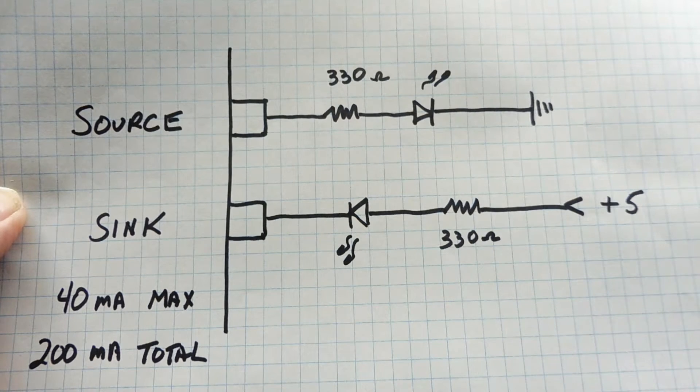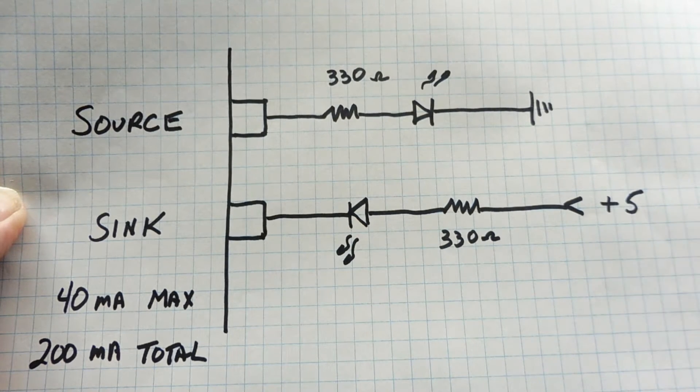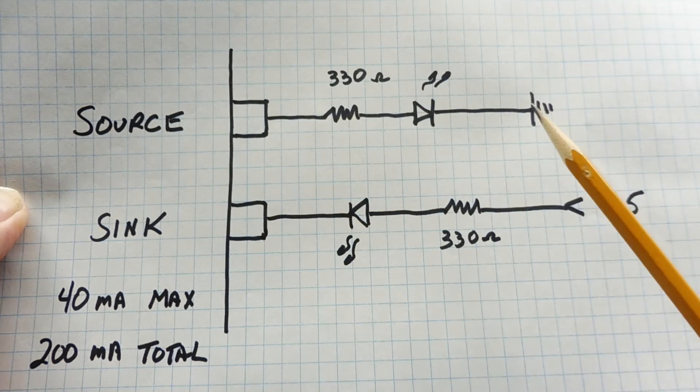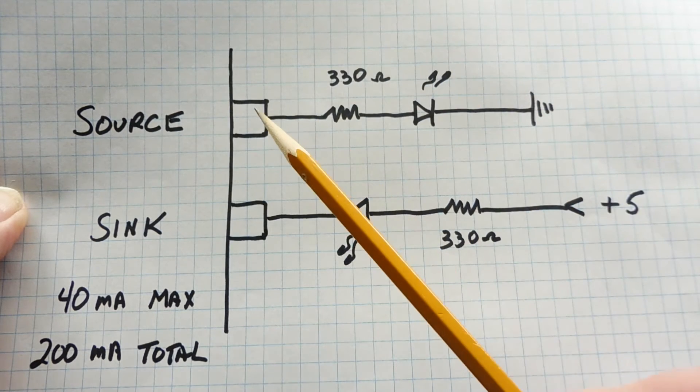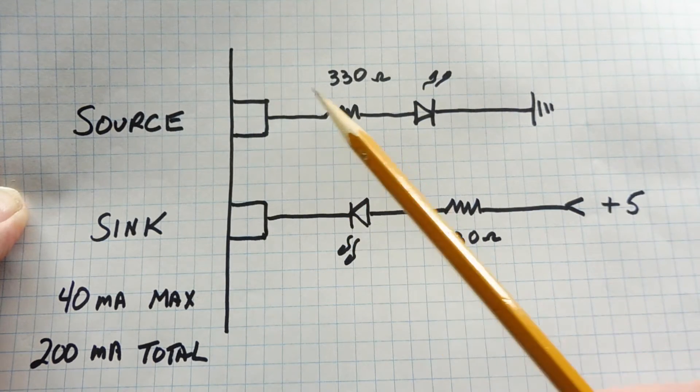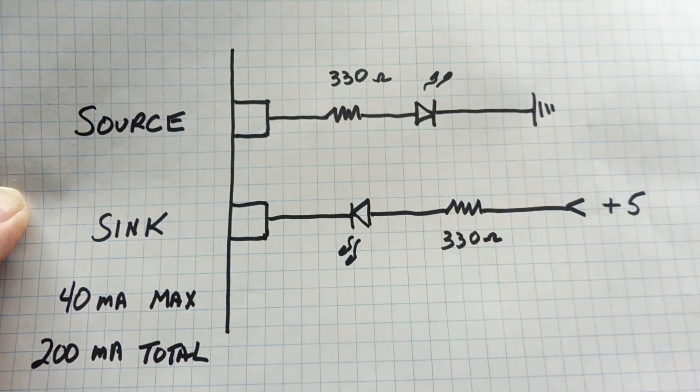On the pin that is sourcing current, the microcontroller supplies the 5 volts, and the user supplies the ground. So you have current flowing from the pin, plus 5 volts through the resistor LED to ground, and turning on the LED.